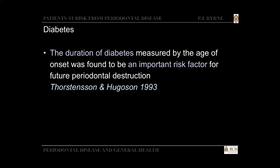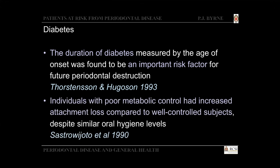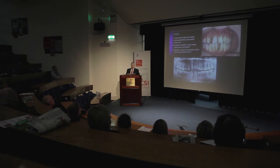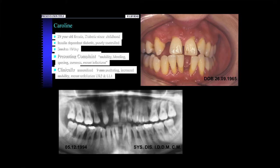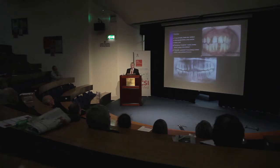The duration of diabetes, measured by age of onset, was found to be an important risk factor for future destruction. Individuals with poor metabolic control had increased attachment loss compared to well-controlled subjects, despite similar levels of oral hygiene. Here's an unfortunate case — a 29-year-old diabetic since childhood, insulin-dependent, poorly controlled, and additionally a smoker. Unfortunately, this lady died of diabetic complications about two years after this slide was taken.